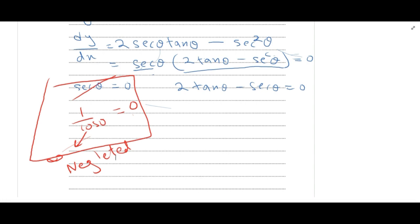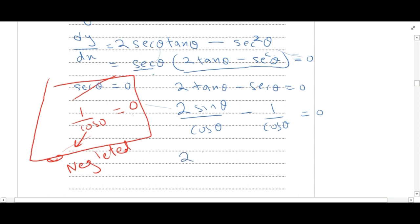We are left with 2 tanθ minus secθ equals 0. Simplifying: 2 sinθ over cosθ minus 1 over cosθ equals 0, which simplifies to 2 sinθ minus 1 equals 0.